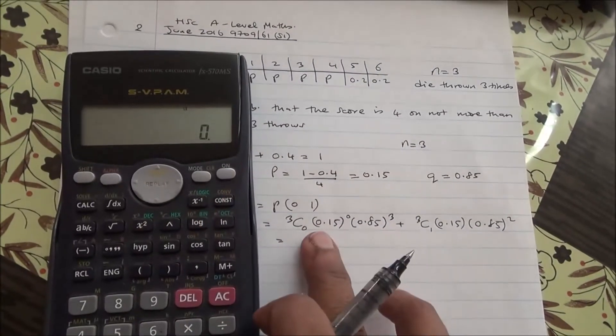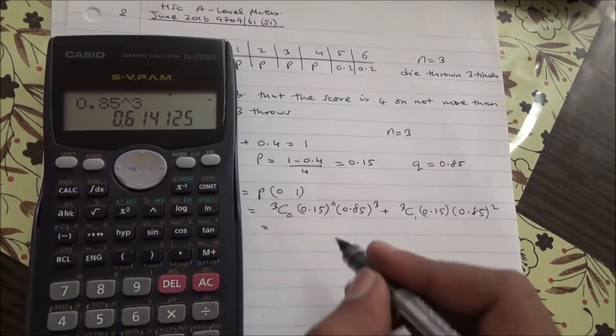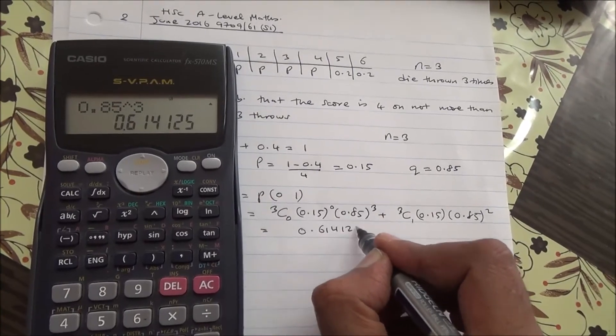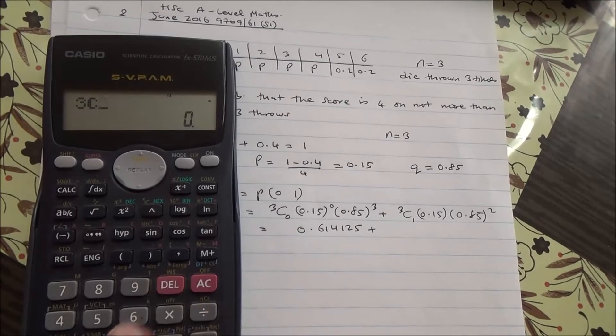So, 0.85 to the power of 3, which is 0.614125, plus 3C1.